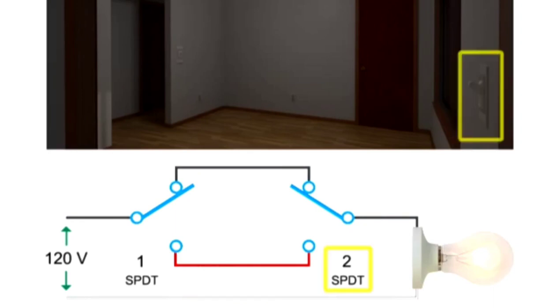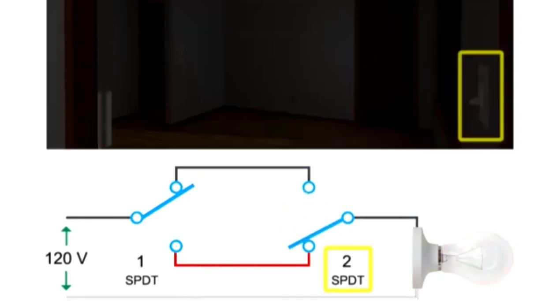If you place switch two in the down position while switch one remains in the up position, the circuit is broken and current does not flow to the light bulb.